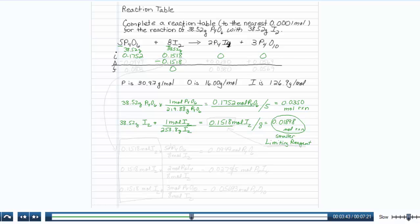Now, the other reagents have to base themselves off the limiting reagent. So to figure out the other amounts, I'm always going to start with the 0.1518 moles of I2. And I notice from the reaction coefficients that for every 8 moles of I2, I consume 5 moles of P4O6.